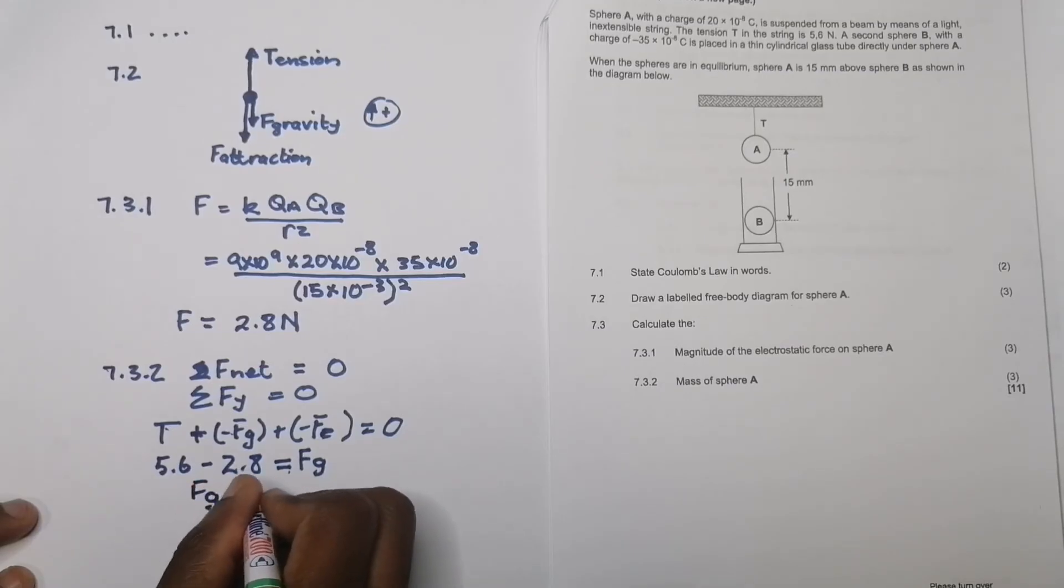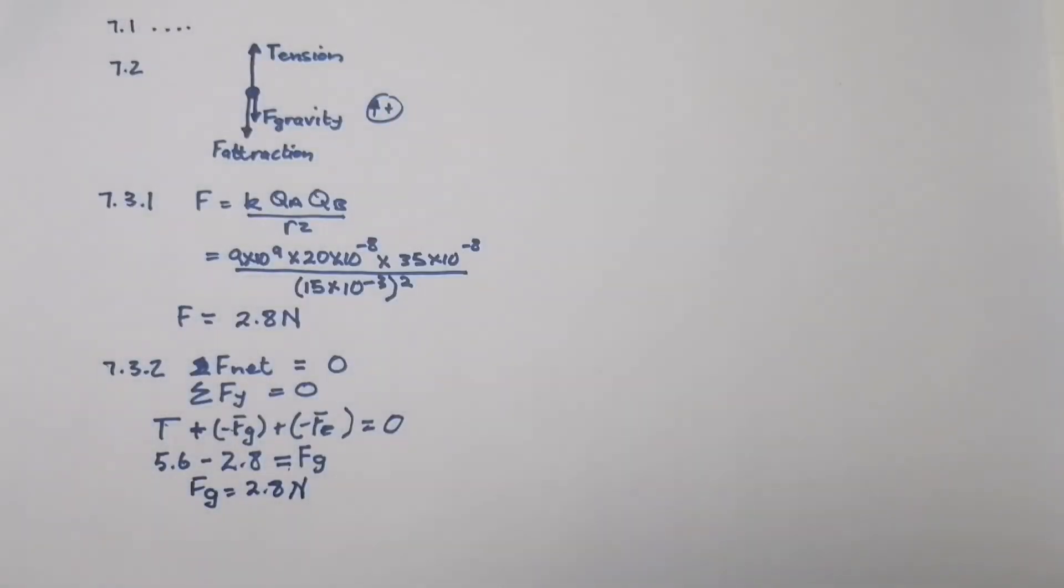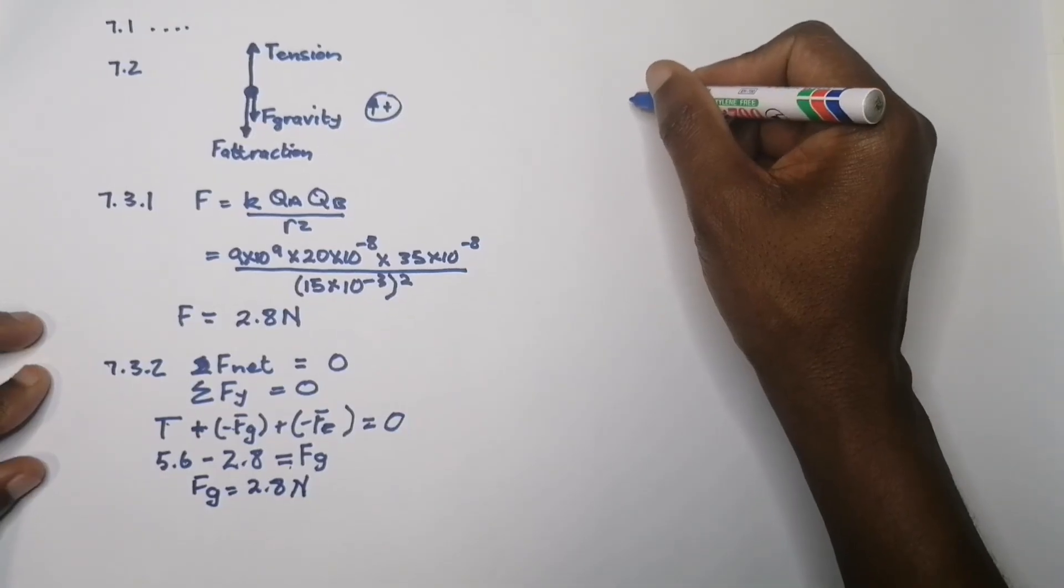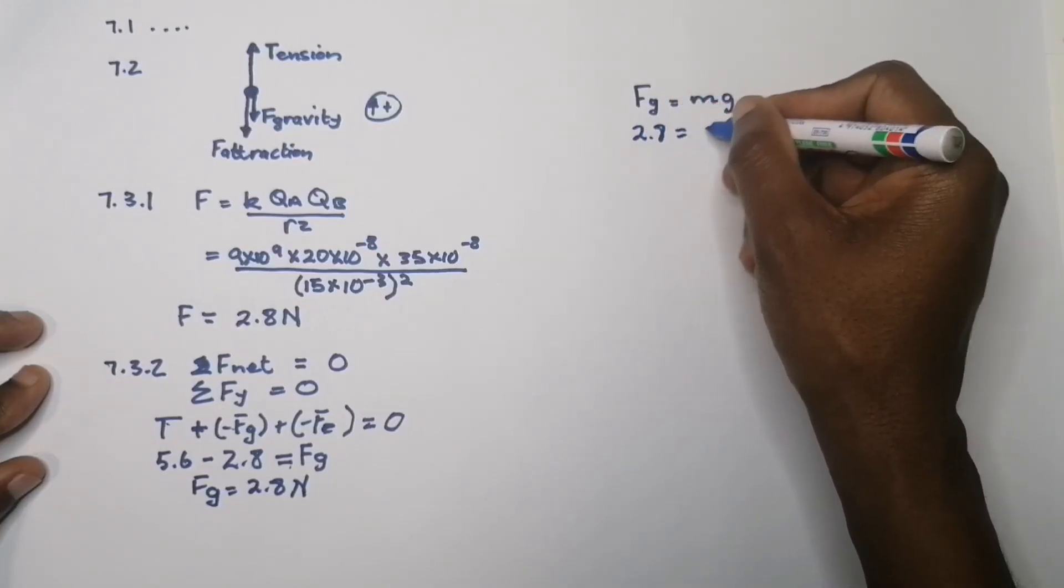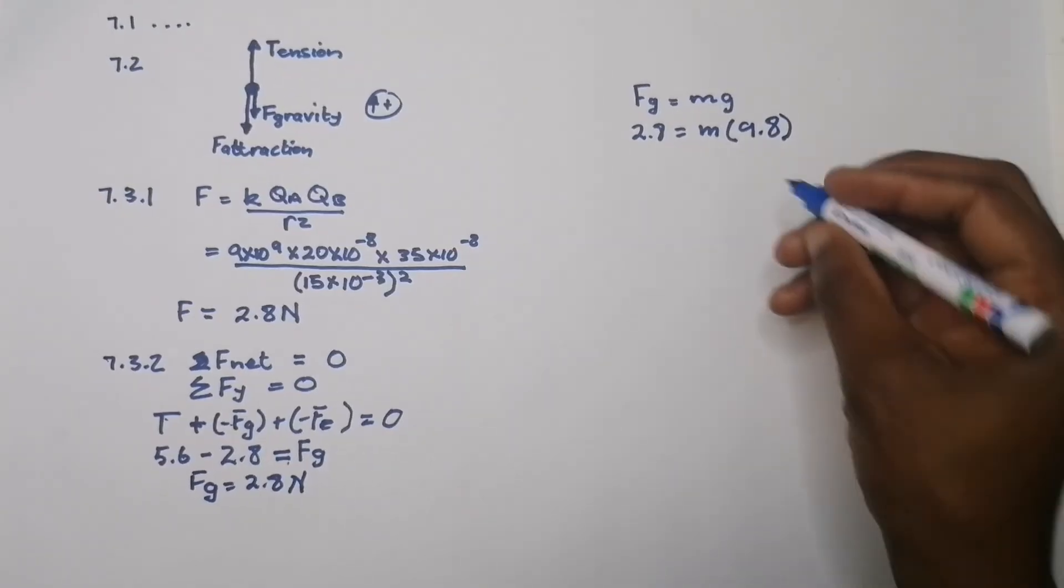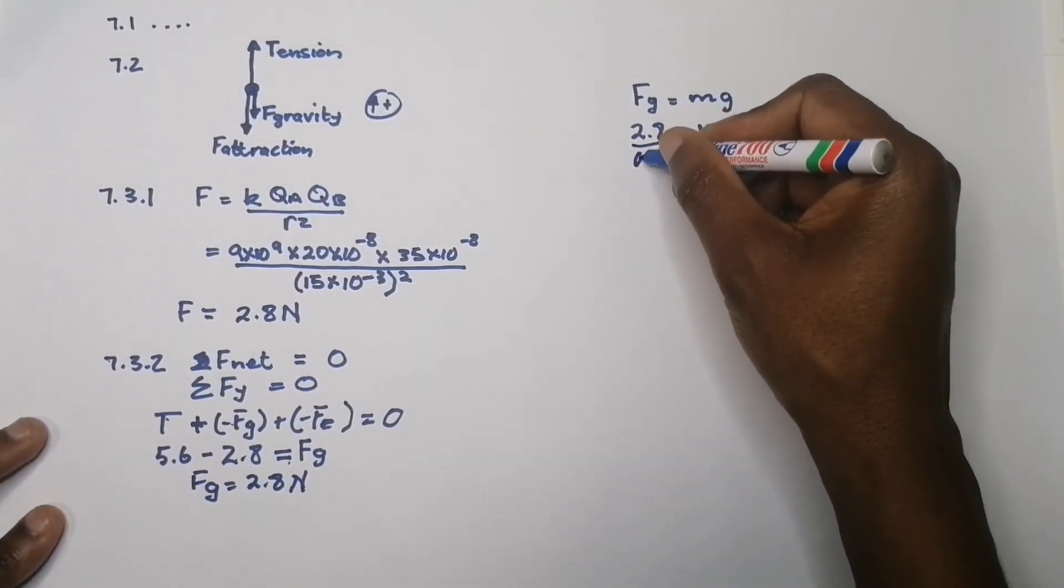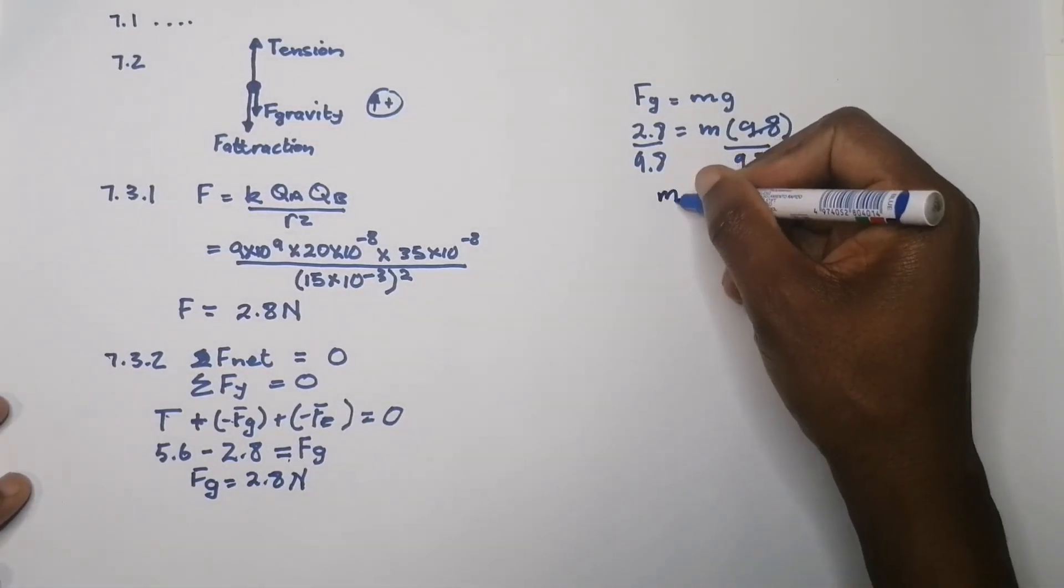The force of gravity is 2.8 newtons, but they asked us to find the mass. Now that we know F_g equals mg, this is 2.8 and the mass is what we're looking for. Gravitational acceleration is always 9.8, so we divide both sides by 9.8. Our mass would be 2.8 divided by 9.8, which gives us 0.29 kilograms. Remember in physics we work with mass in kilograms.